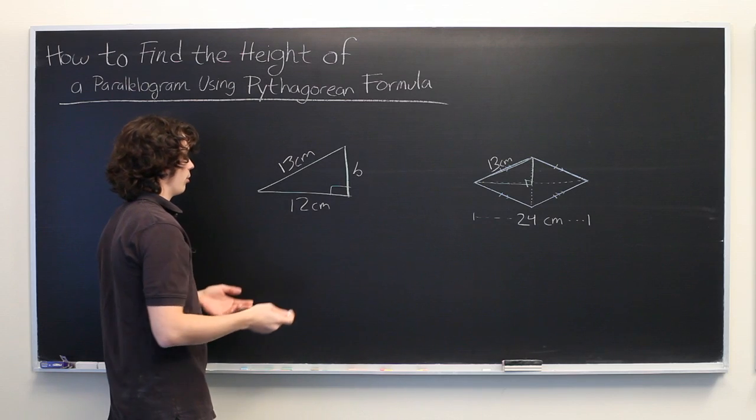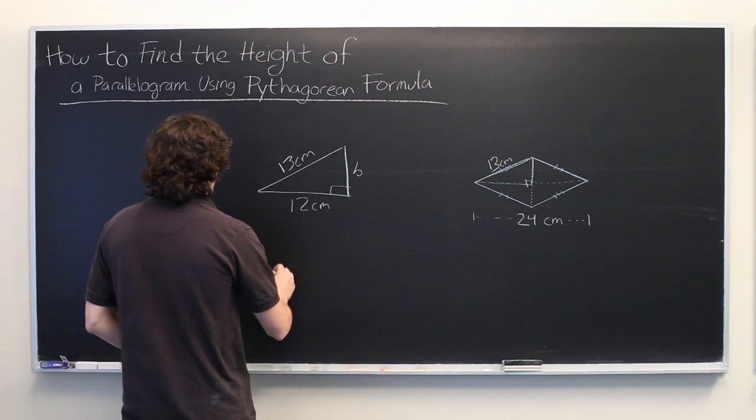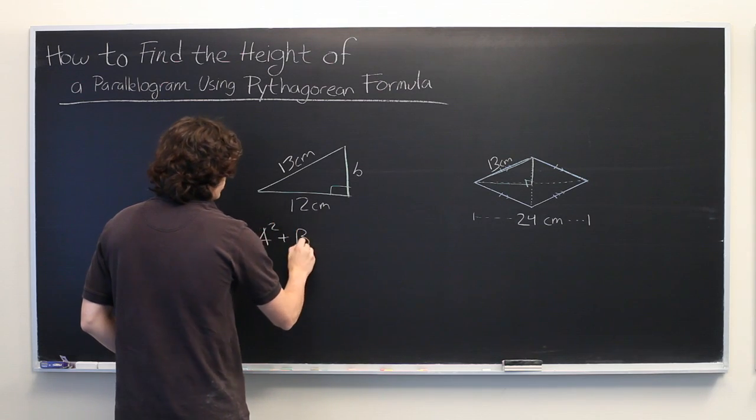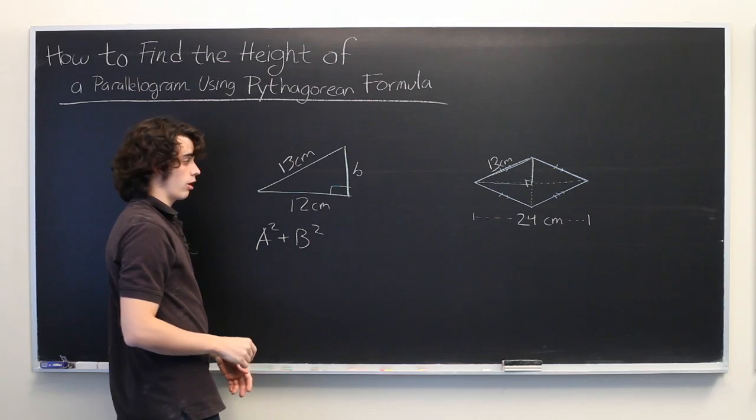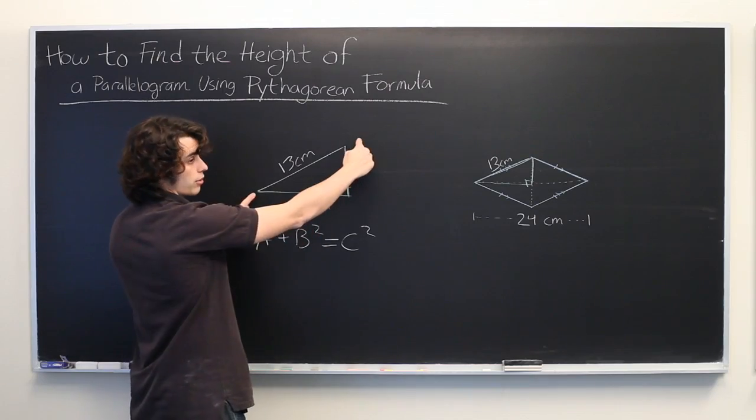This is fairly simple. All we need to use is the Pythagorean formula, which states that A squared plus B squared, where A and B represent the lengths of the legs of a right triangle, equals C squared, where C represents the length of the hypotenuse.